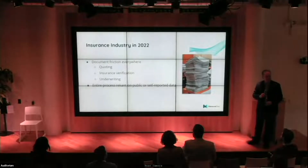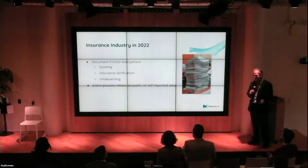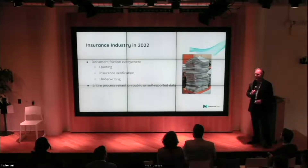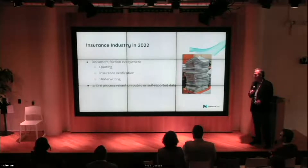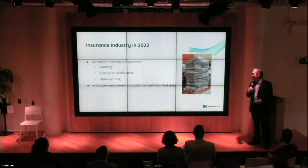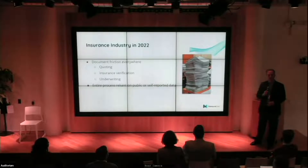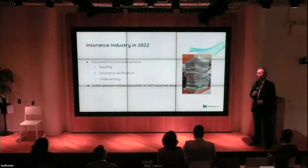If we look at the insurance industry today, document friction is everywhere. PDFs are flying — images of PDFs, PDFs of images of PDFs — quoting, verification, underwriting. It's sometimes what the whole process feels like: standing underneath a mountain of documents. And of course, the entire process is reliant on public and self-reported data on top of everything else.